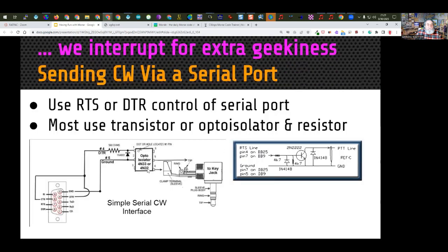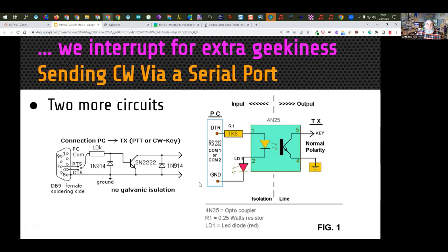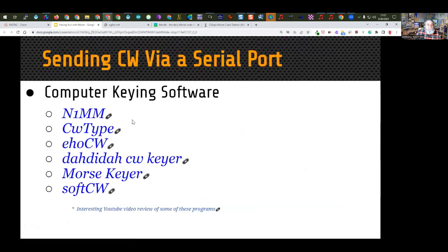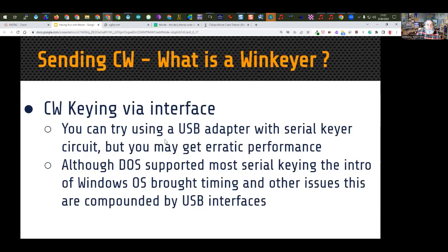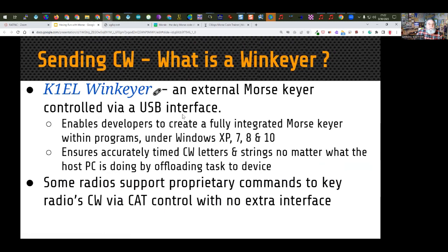This is an example of a simple circuit you could use with a serial port or serial USB adapter to key your radio. It uses an opto-isolator so that voltages don't travel between the two. You can also do it with transistors and diodes. Here's some keying software you can use to electronically key your radio. With Windows, you can sometimes run into timing problems, so a lot of people go with the WinKeyer. Some radios support proprietary CAT control commands to key the radio CW — I have an Elecraft K3 and I can send CAT controls to make it key that way, which I also do for digital modes.